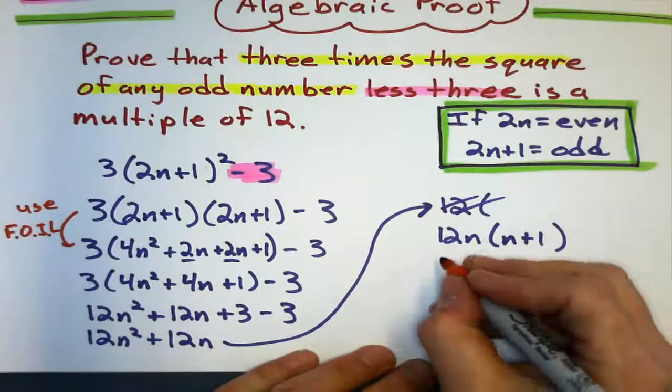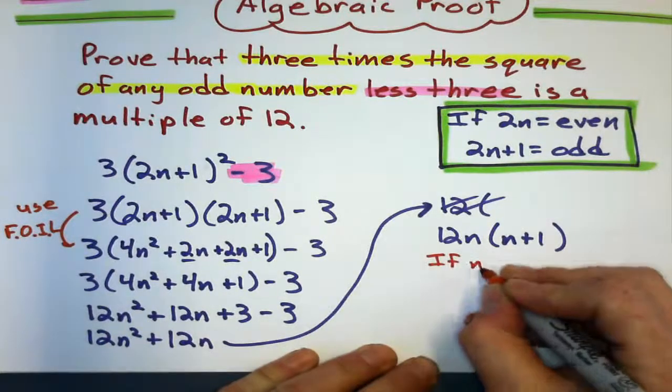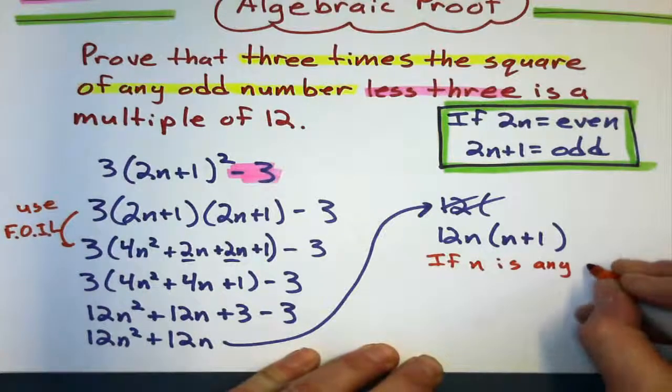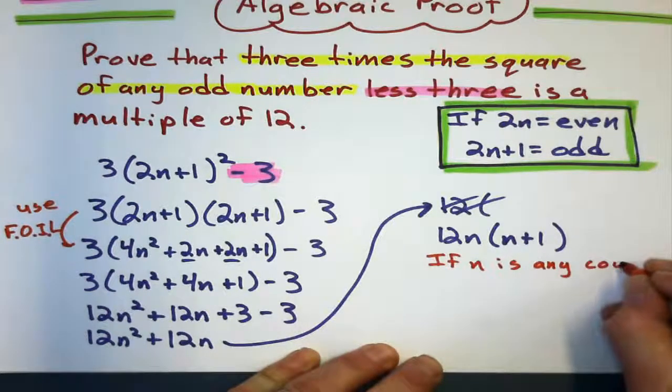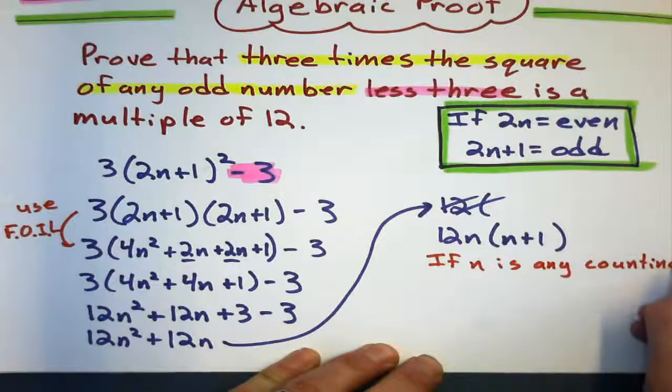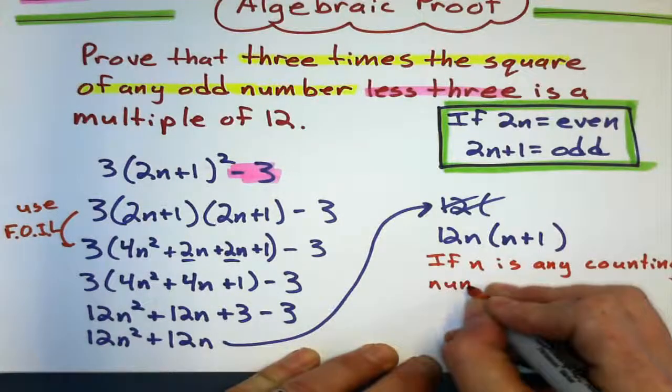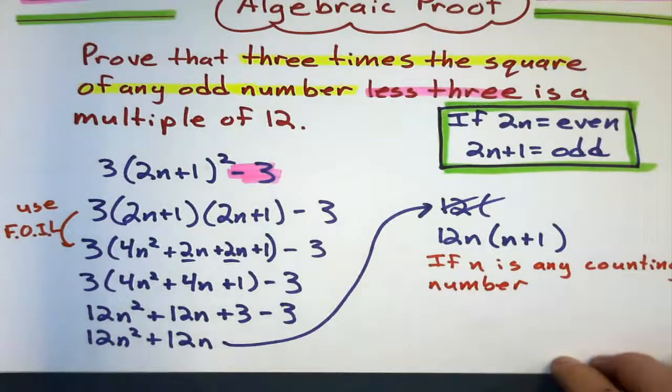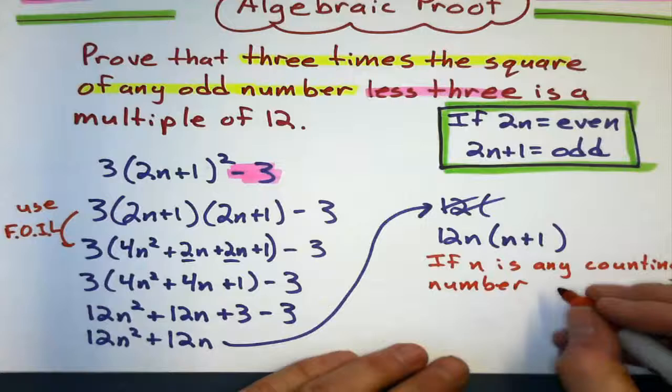Let's put this in words. Okay, if n is any counting number, meaning 1, 2, 3, 4, whatever. If n is any counting number.